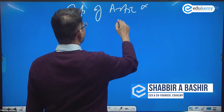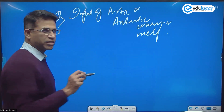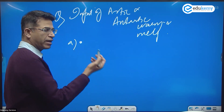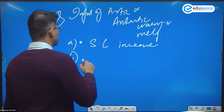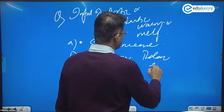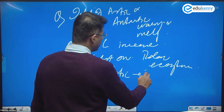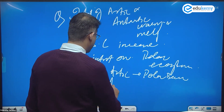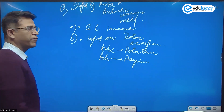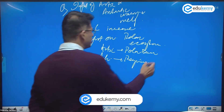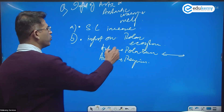There are four to five generic impacts of Arctic and Antarctic warming and melting. The first main impact is sea level increase — that's a common impact. The second impact is on polar ecosystems: in the Arctic region, polar bears are affected, and in Antarctica, penguins are the key life forms impacted, along with a range of other animals.